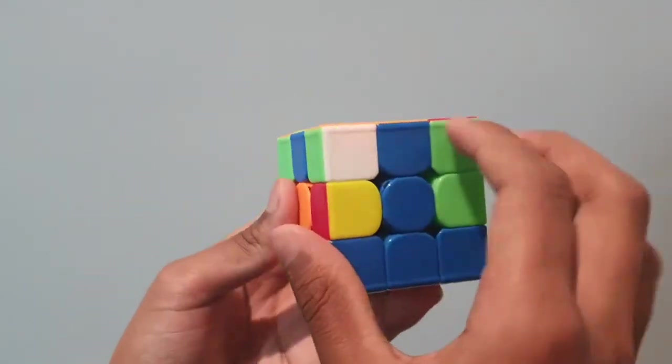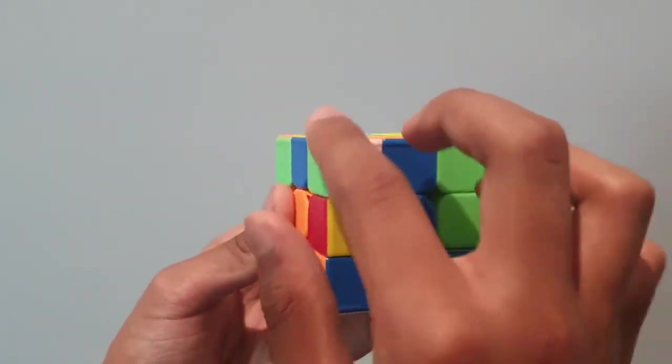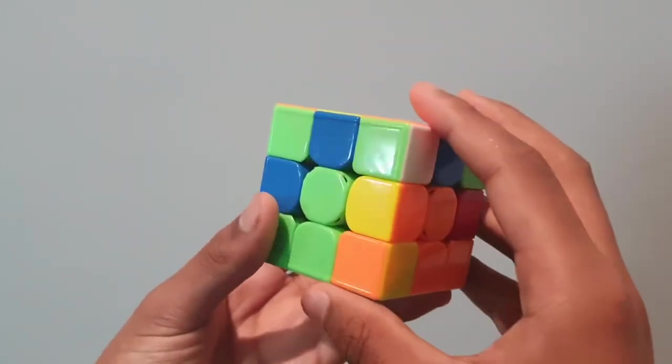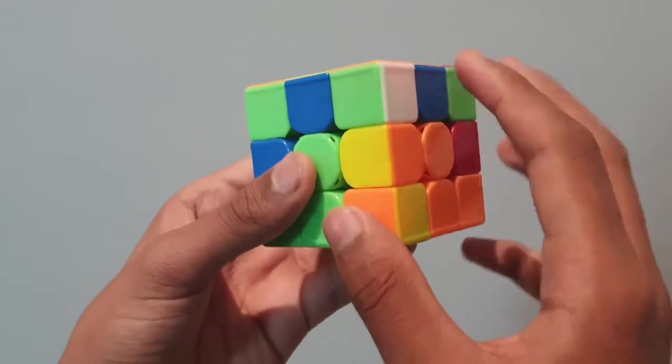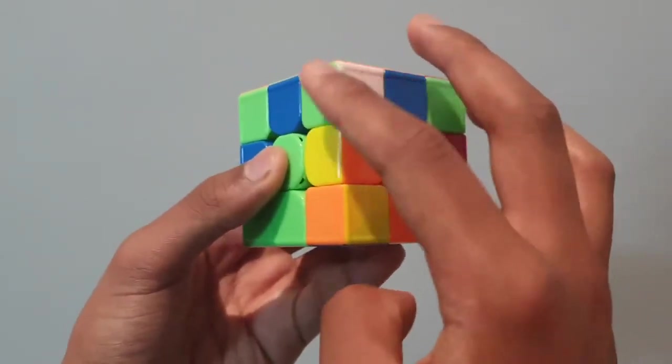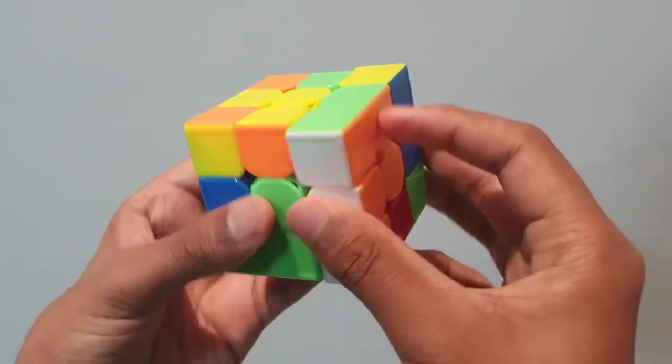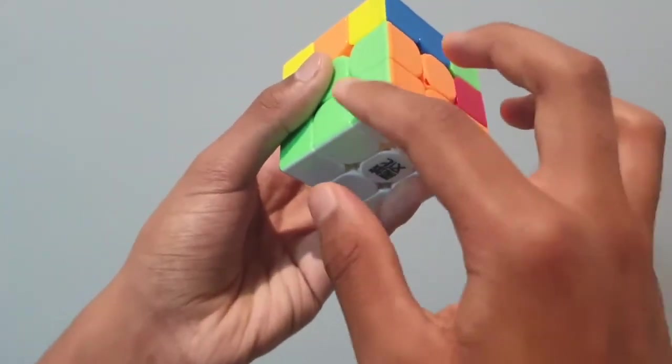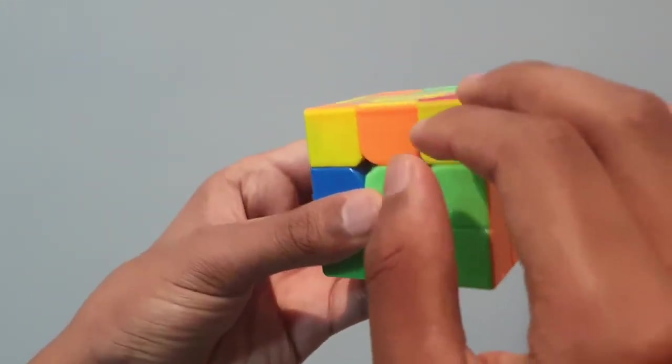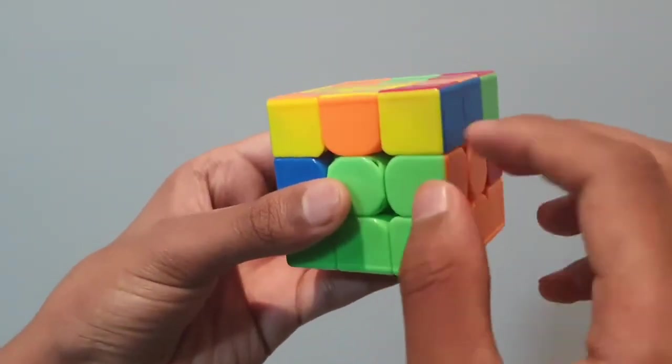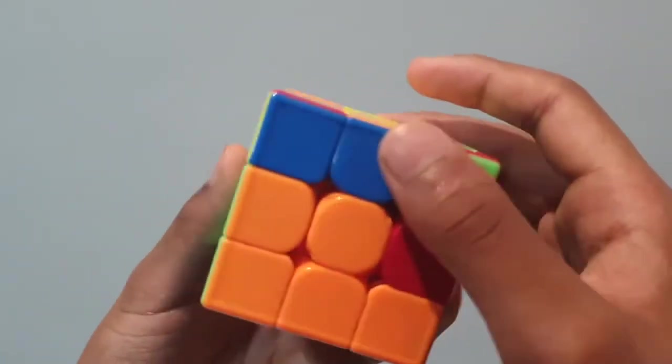We then have dislodged this one white piece. So you shift this back, and as seen in the previous video, we create this diagonal line and simply do a right trigger because it's on the right side. And along with this one dislodged white piece, we've also brought back this one edge piece. So that is basically what we do for the rest as well.